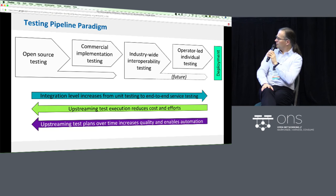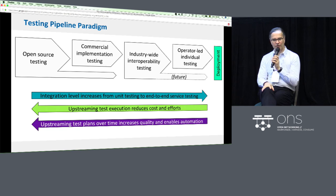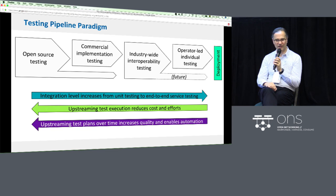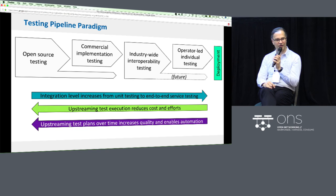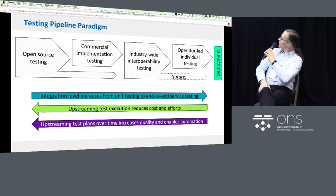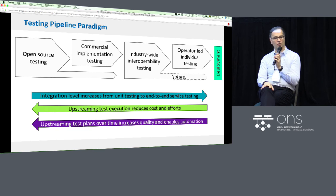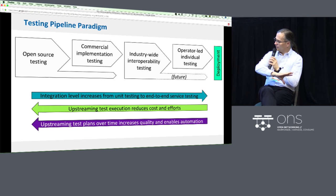It all starts with open source testing, and then commercial implementations are derived from open source. Once that is done, industry-wide interoperability needs to be tested across all these different implementations, and in the end operators and service providers do their own testing. The more we get to the right side of this diagram, the more expensive testing becomes because everybody is doing this in their own premises and recreating the same experiences.